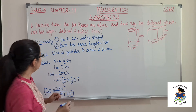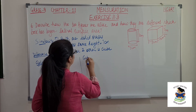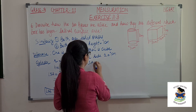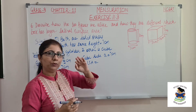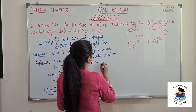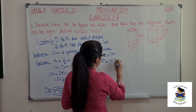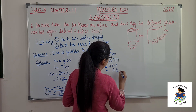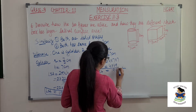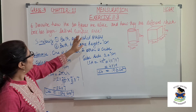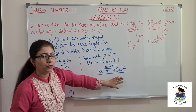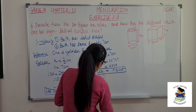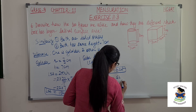Now for the cube, the side is 7 centimeter. Lateral surface area of a cube is 4a square, since we exclude the ceiling and the floor. So this is 4 × 7 × 7, which equals 4 × 49, giving 196 centimeter square. Comparing 154 and 196, we can see that the cube has the larger lateral surface area.